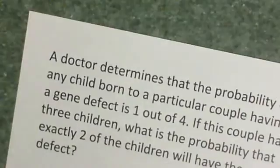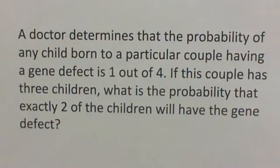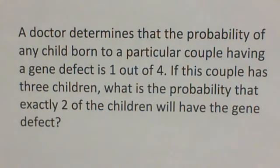Now this is the problem I would like you to try, and then you can click the link to see how well you did. A doctor determines that the probability of any child born to a particular couple having a gene defect is 1 out of 4. If this couple that they're talking about has 3 children, what is the probability that exactly 2 of the children will have the gene defect? Again, try it yourself, and then click the link to see how you did.